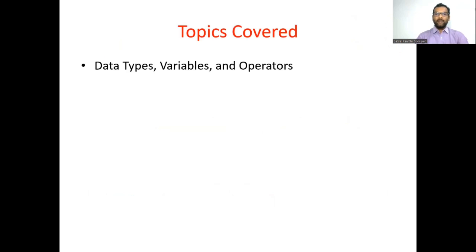The first topic is data types, variables, and operators in Java. There are different data types in Java like int, float, and double to handle numerical data, string for handling character data, and boolean for handling true or false kind of data. The purpose of a variable is to store some values, and we will discuss how to declare variables and what rules to follow for defining them.